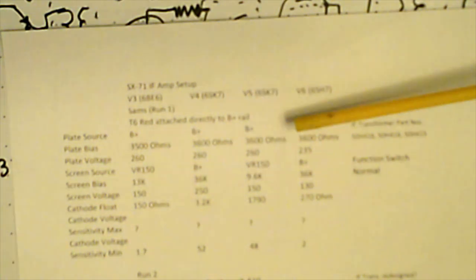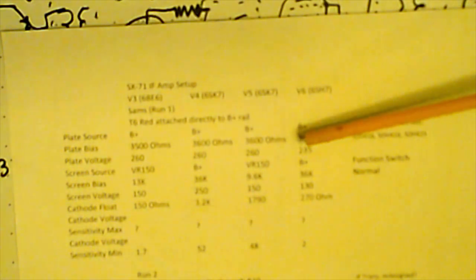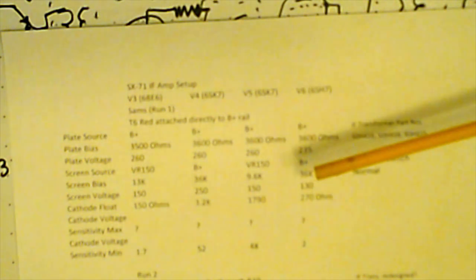Now in run one, what we see is the plate voltages run around 260 for the 6BE6, the first IF 6SK7 V4, and the second IF 6SK7. The screen voltage is 150 on the 6BE6, 250 on the first IF, and 150 on the second IF. Looking at this, it's kind of like they've got this design running pedal to the metal, nitro injection. This radio is running really hot. And that's sort of a supposition, but lo and behold, there's a service bulletin.